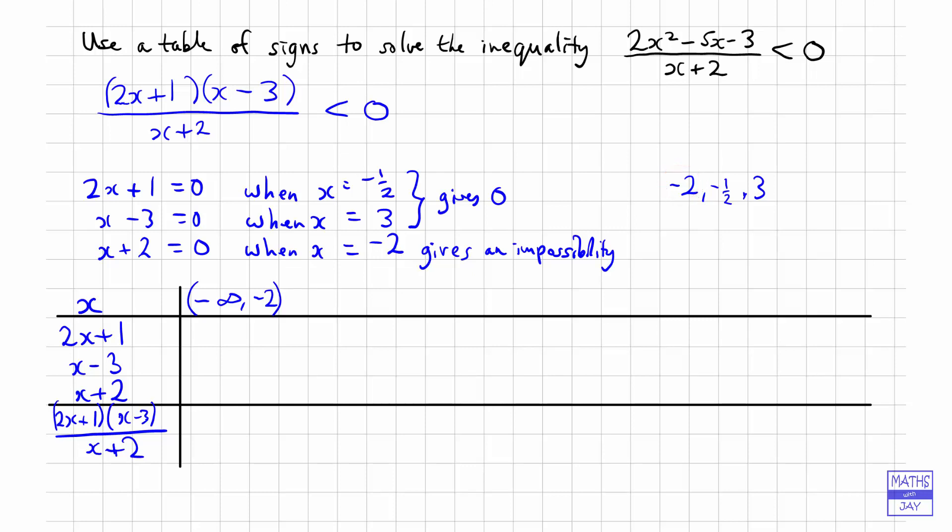So the next column is just going to have minus 2, and then we've got from minus 2 to minus 1 half. So the next column is minus 1 half, then we go from minus 1 half up to 3. So all we need to put in now is the 3, and then 3, and then 3 up to infinity.